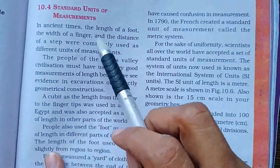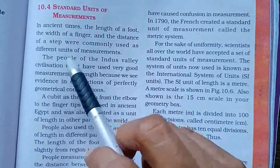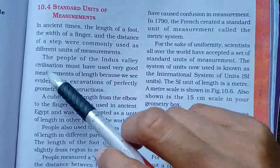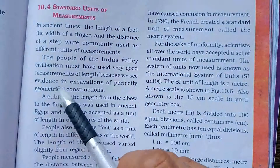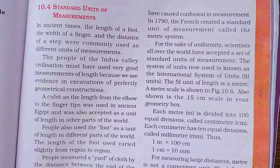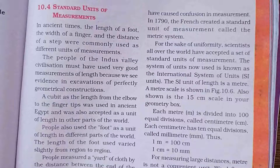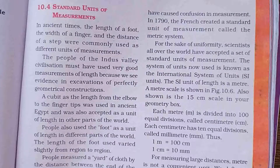In ancient times, the length of a foot, the width of a finger, and the distance of a step were commonly used as different units of measurement. The people of the Indus Valley civilization must have used very good measurement of land, because we see evidence in excavation of perfectly geometrical construction. पहले के लोग बहुत अच्छे measurement का use करते थे क्योंकि हमारे पास geometrical construction बहुत अच्छा है. Feet की length से या finger से perfectly distance नहीं दिया जाता — वो different units हैं.